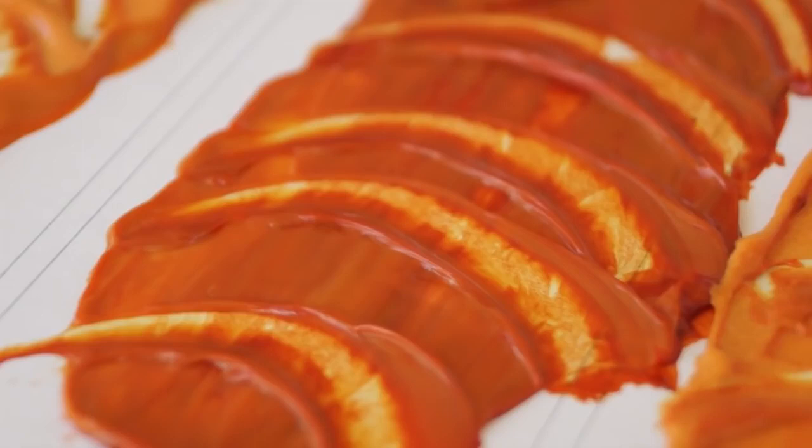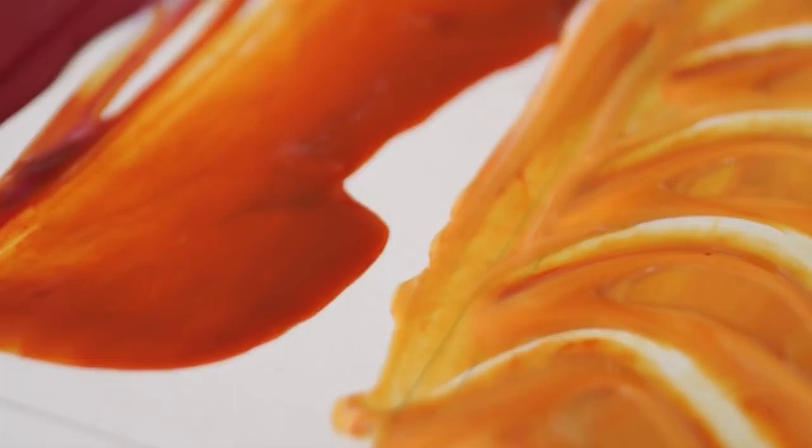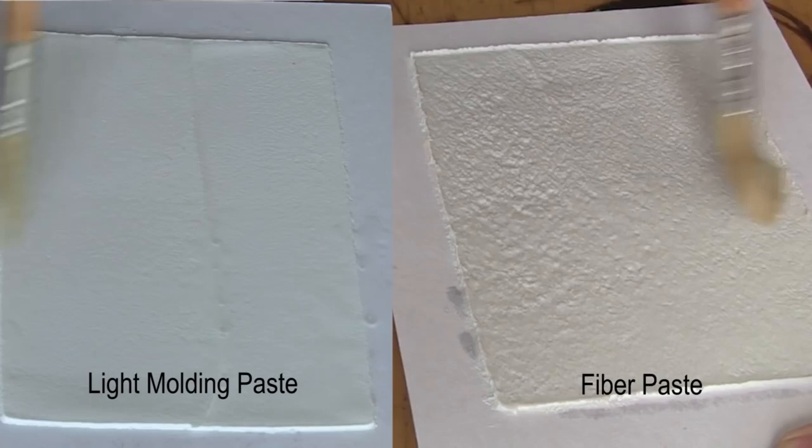Here we have two dry sample boards, one with light molding paste and one with fiber paste. We're going to wet half of each board and show how Golden high flow and fluid paints react differently on each surface.